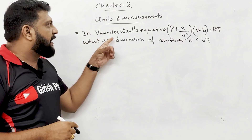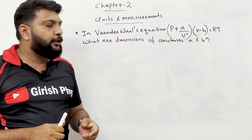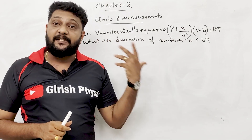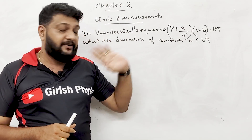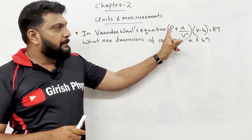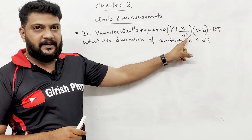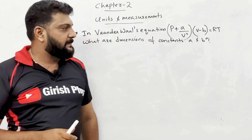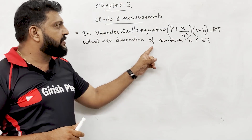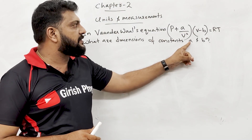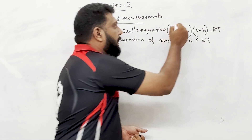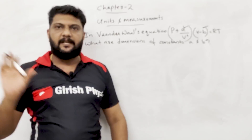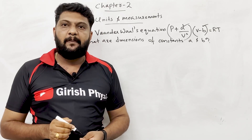Next question: In the Van der Waals equation, (P + A/V²)(V − B) = RT, what are the dimensions of constants A and B? Here P is pressure and V is volume.